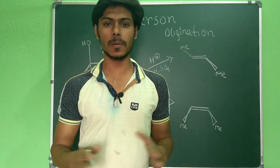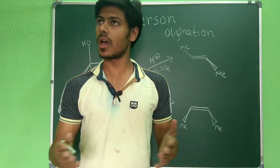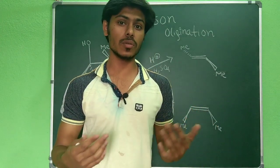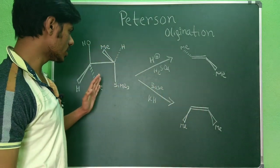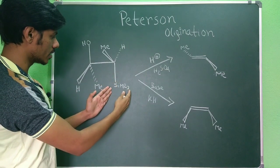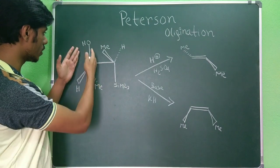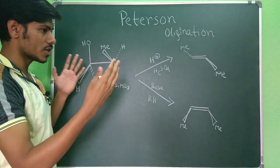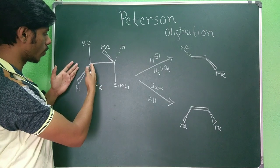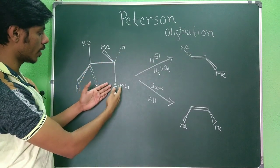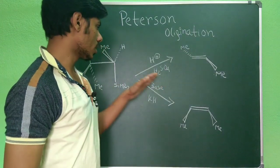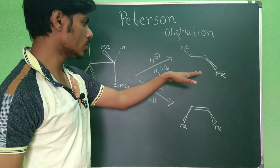Although the reaction is simple, students are confused about when they will get which isomer, because varying the reaction condition gives different products. Basically, the starting material is a compound where you have a trimethylsilyl group on one carbon and a hydroxyl group on the vicinal carbon. Depending on whether the reaction condition is acidic or basic, you will get two different products from the same starting material.